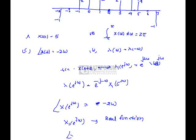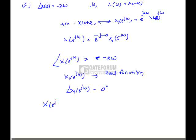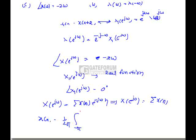The angle of x is nothing but minus two omega. Here x1 is nothing but a real function whose phase is nothing but zero. That is, angle of x1 is zero degrees. Here x is nothing but summation x of n times e power minus j omega n. From this, x at omega equals zero is equal to summation of x of n, which is not equal to zero. Hence option A is not true. Option B is also not true. Hence option C is the only correct option.